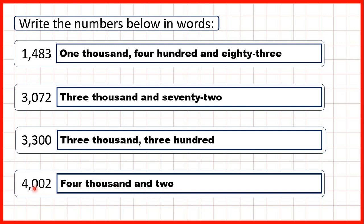Remember: if we have zero in our hundreds, then rather than writing a comma after the word 'thousand', we need to write 'and' and then the rest of our number.